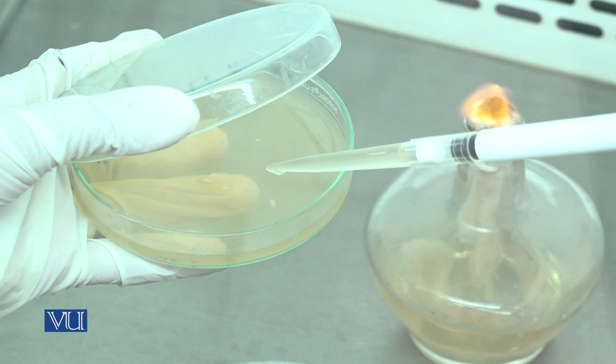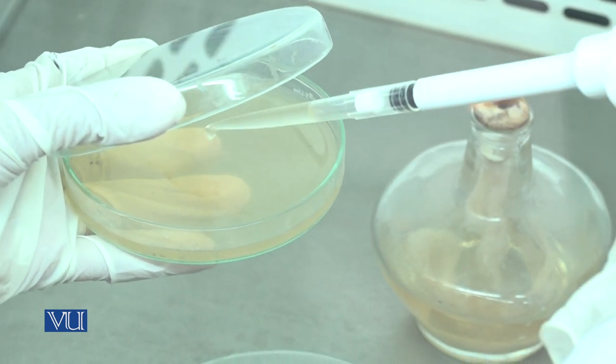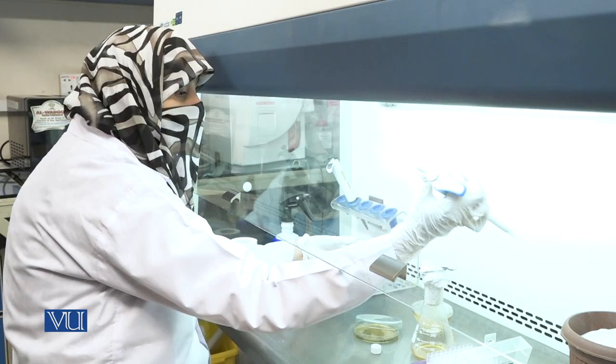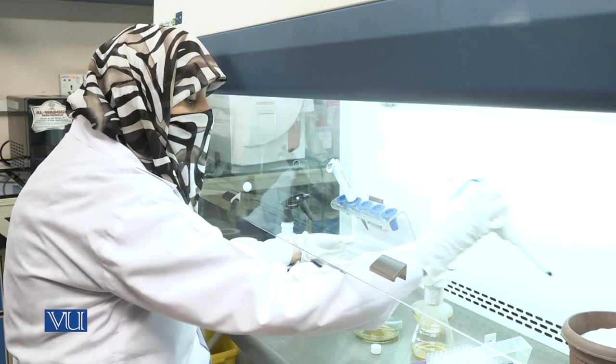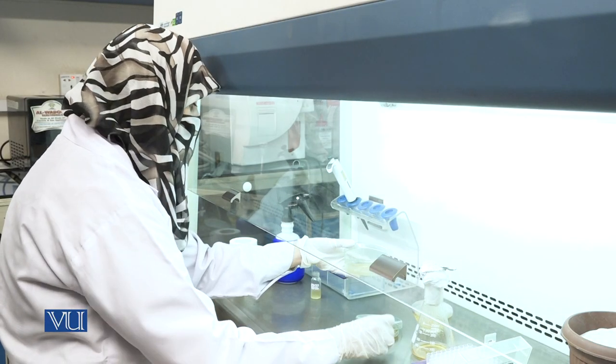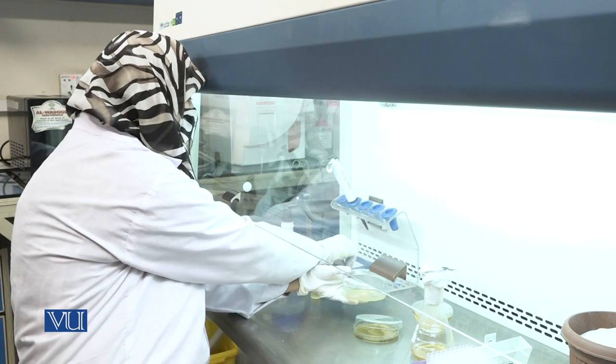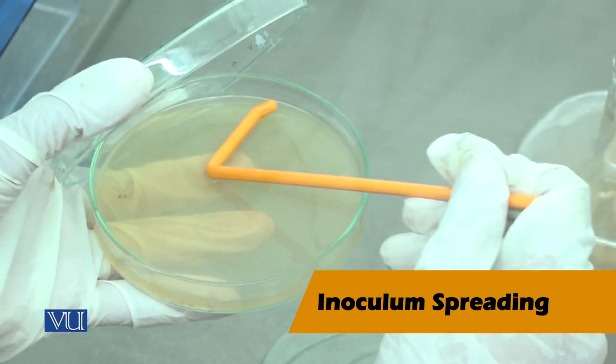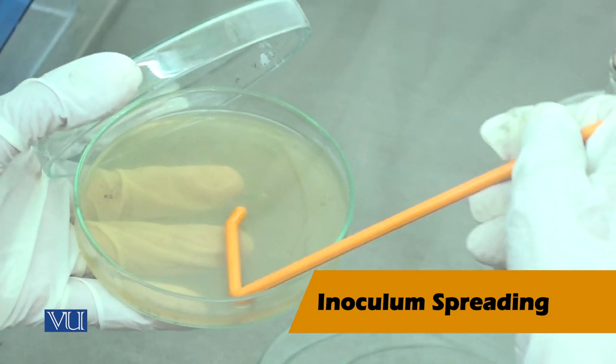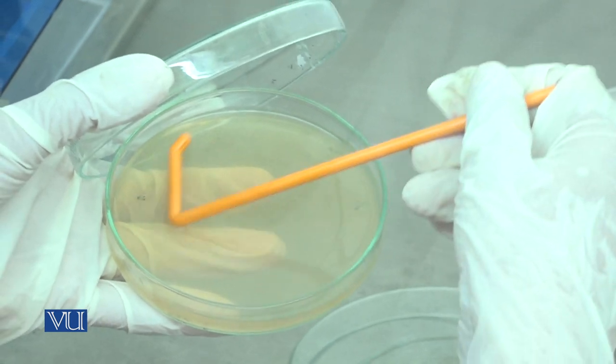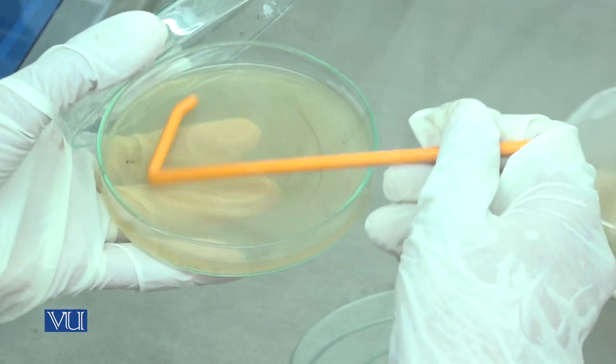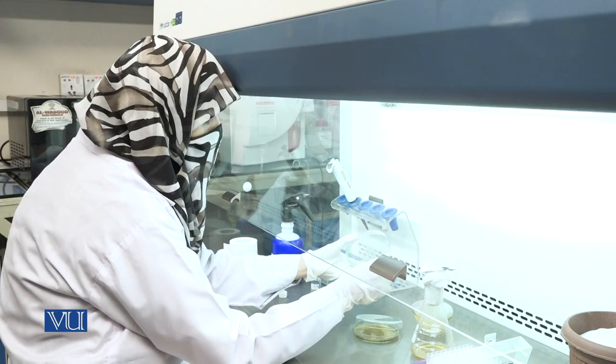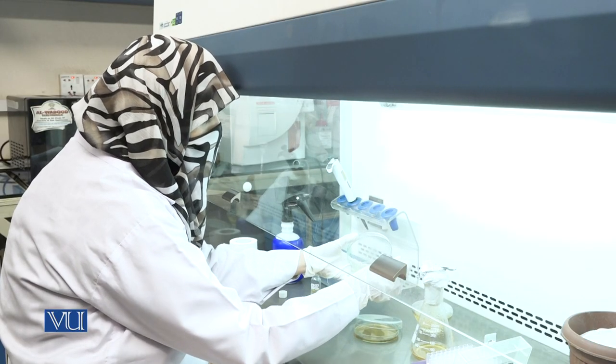Now, I set the pipette to 1000 microliters and take 1 ml culture. Pour the inoculum on the surface of agar. Discard the tip. Spread the inoculum evenly on the surface of agar plate.